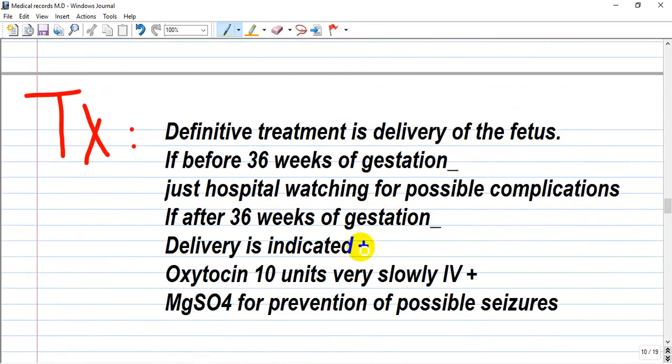How we treat preeclampsia? Definitive treatment is delivery. Many teaching lecturers say that no tissue, no issue - or bad tissue is excluded from the body and the problem disappears. It's real, because if delivery occurs and expulsion of the placenta, no more issues. If before 36 weeks of gestation, just hospitalize and watch for possible complications. If after 36 weeks, delivery is indicated.